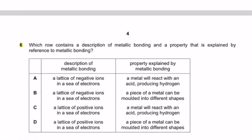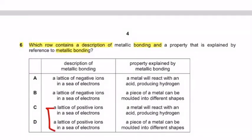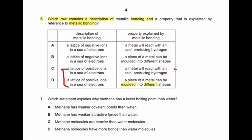Question 6: Which row contains a description of metallic bonding and a property that is explained by reference to metallic bonding? What is metallic bonding? Metallic bonding shows that a lattice of positive ions in a sea of mobile electrons. It means we have to choose from C and D option because it is a lattice of positive ions. Then we will see which property relates with its metallic bonding. This property, a metal reacts with an acid producing hydrogen, it is a chemical property. A piece of metal can be moulded into different shapes. This is the property due to its metallic bonding. So correct answer will be D.